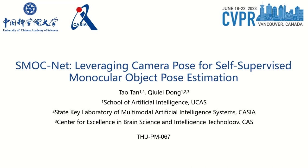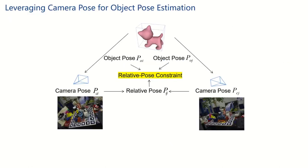My name is Tan Tao from the School of Artificial Intelligence at the University of Chinese Academy of Sciences, also affiliated with the Institute of Automation, Chinese Academy of Sciences. It is my pleasure to present our work titled Smokulate: Leveraging Camera Pose for Self-Supervised Monocular Object Pose Estimation. The objective of our research is to train an object pose estimator in a self-supervised manner, eliminating the need for annotated real data during the training phase. We propose a relative pose constraint that leverages corresponding camera pose to geometrically restrict the object poses. Unlike object poses, camera poses for a set of multi-view images can be easily obtained using methods such as structure from motion.